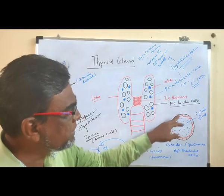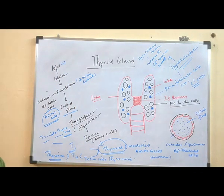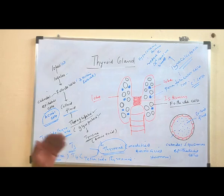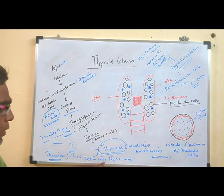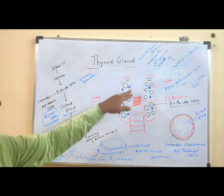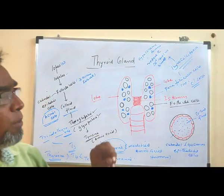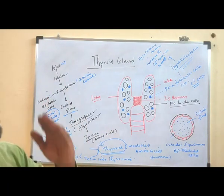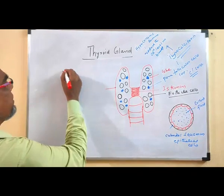Inside these follicle cells, there is a lumen — a cavity — and this cavity contains a colloid fluid. This colloid fluid contains thyroglobulin, which is a glycoprotein. This glycoprotein contains tyrosine amino acids. This tyrosine helps in the synthesis of thyroxine. Thyroxine has two forms: T3 (triiodothyronine) and T4 (tetraiodothyronine), also called thyroxine hormone. These two hormones come from follicle cells. Apart from follicle cells, there are also parafollicular cells — or C cells — which secrete thyrocalcitonin, which helps to reduce the calcium level in the blood. It is called a hypocalcemic hormone.